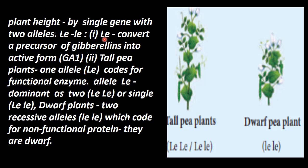This dominant LE gene converts the precursor of Gibberellin into its active form, which is GA1. So, tall plants will have the LE gene present. That one allele, LE, codes for a functional enzyme, so this enzyme makes Gibberellin functional.